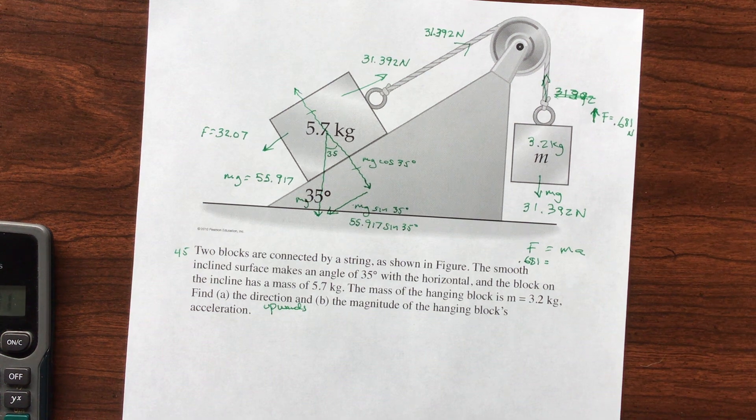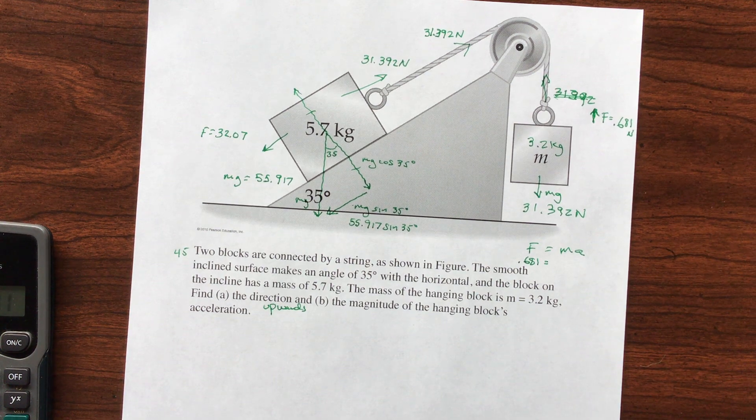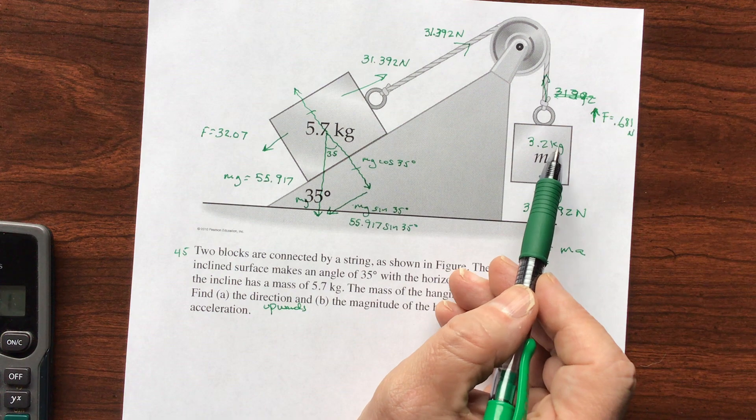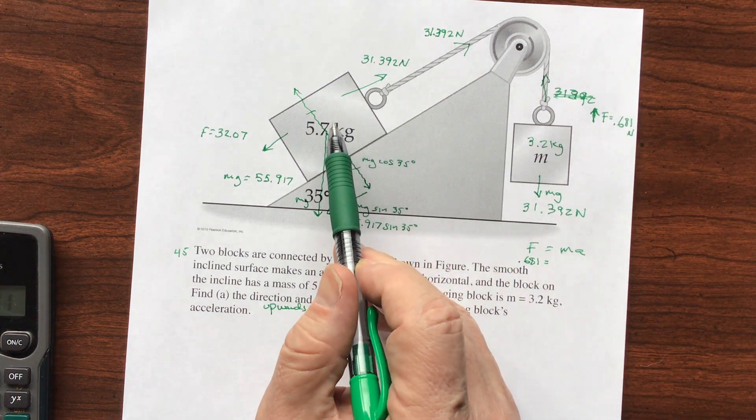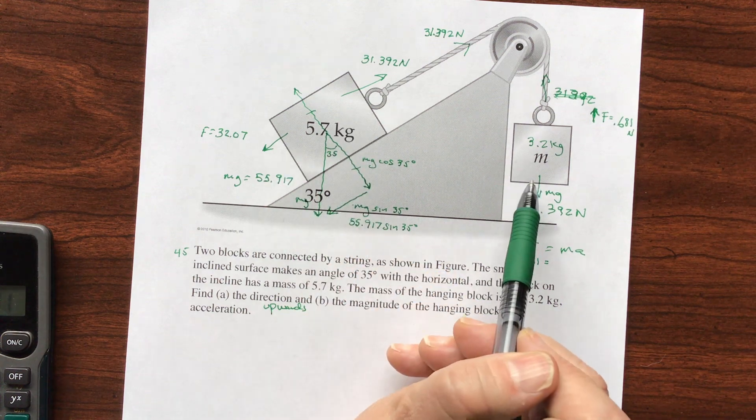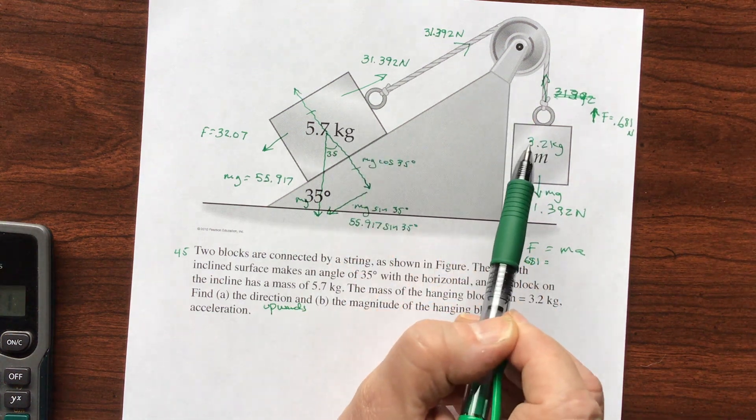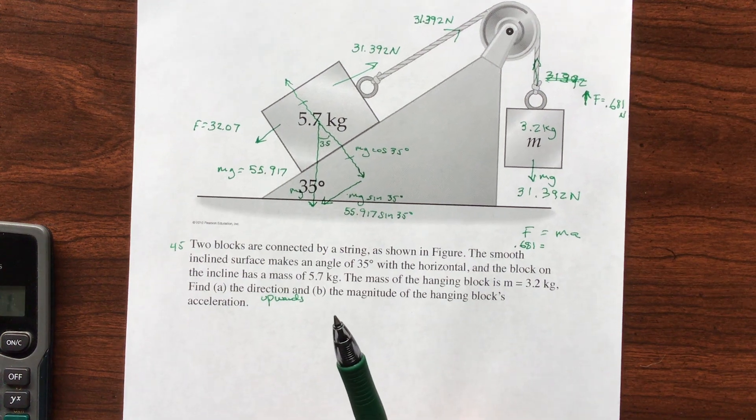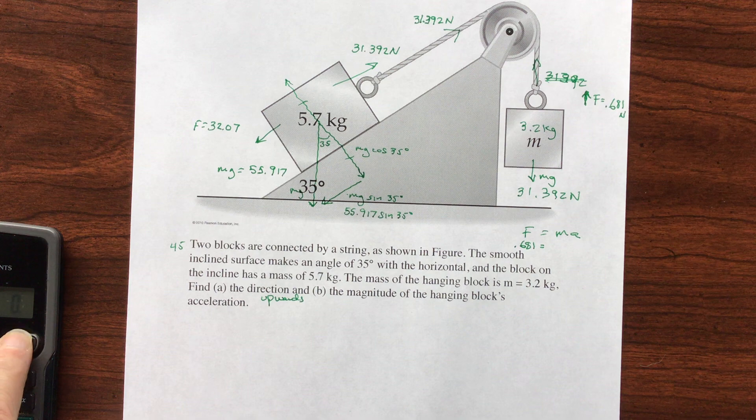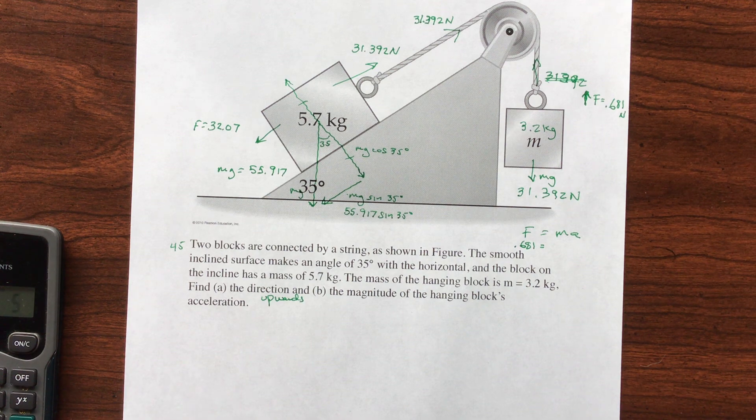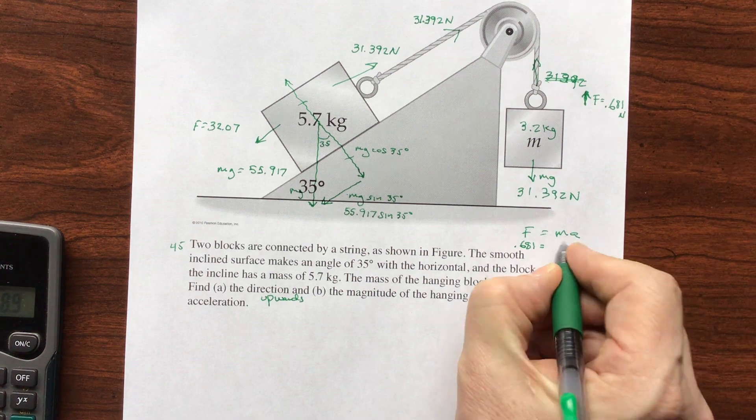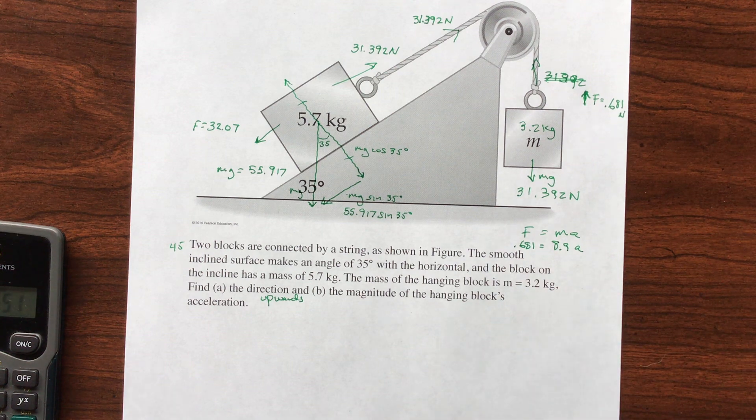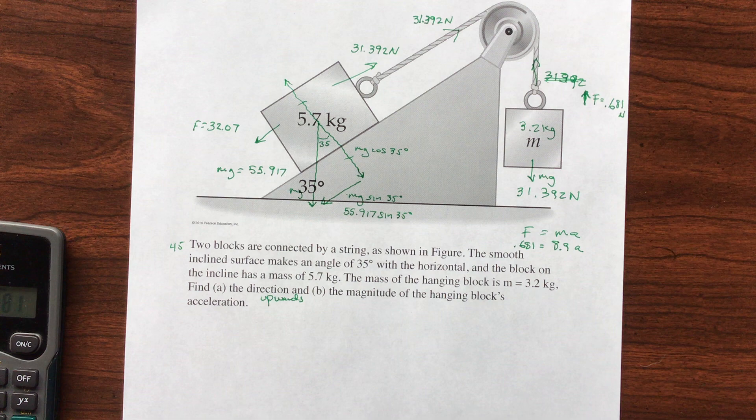Now, here's the part everybody will miss. Maybe you won't. Maybe you're awesome. Probably you are. But we're not just talking about this block. They're connected together. So the acceleration of this block is also going to be the acceleration of this block. This block is moving down. This is moving up. So these blocks are connected together and are considered one mass because the acceleration is for both of this. The system is accelerating. So I need to add those together. So I have 3.2 plus 5.7, and so M is going to be 8.9 kilograms. A divided by 8.9, so 0.681 divided by 8.9.